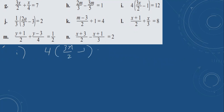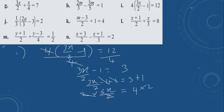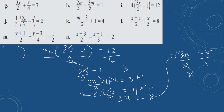Problem i: 4(3x over 4 minus 1) equals 12. First divide by 4. 4 and 4 cancel. 3x over 2 minus 1 equals 3. Remove minus 1 by doing plus 1 on both sides. These cancel. 3 plus 1 is 4. 3x over 2 equals 4. Multiply both sides by 2. 2 and 2 cancel. 3x equals 8. Divide both sides by 3. x equals 8 over 3, which as a mixed number is 2 and 2 over 3.